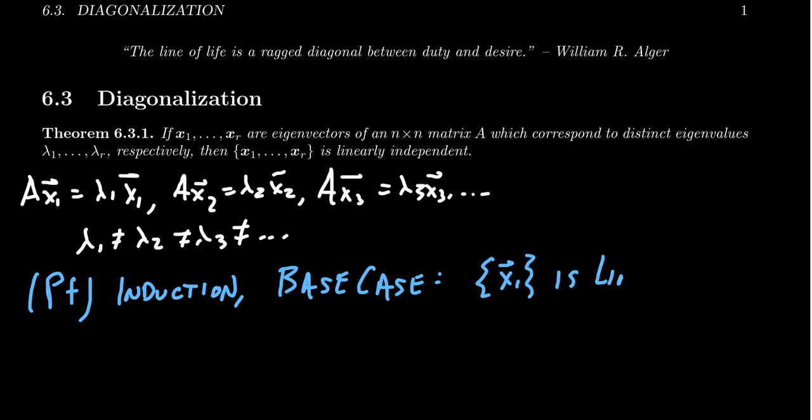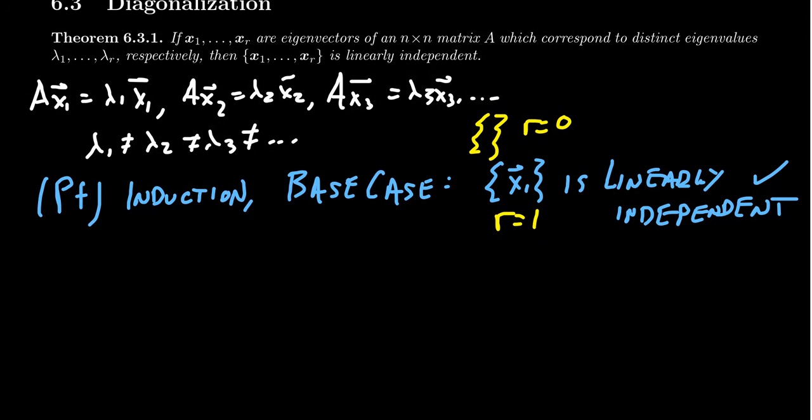Because after all, a set of one vector is independent if and only if it's non-zero. And eigenvectors are not allowed to be zero. So we do get that. It is independent sometime. And admittedly, I might even start off with the empty set. If you have no eigenvectors, R equals zero in that case. That also would act as a base case. But it feels a little bit more natural for those somewhat new to linear algebra to start with R equals one.